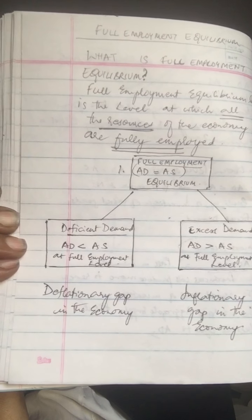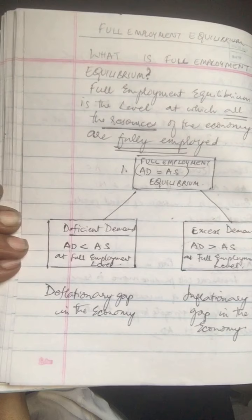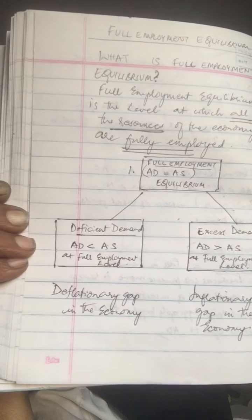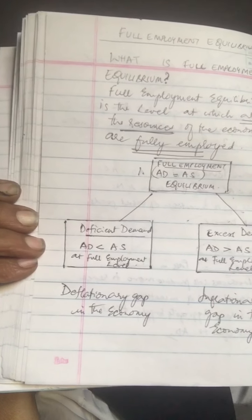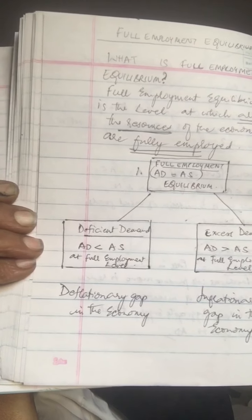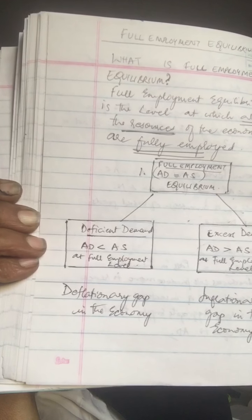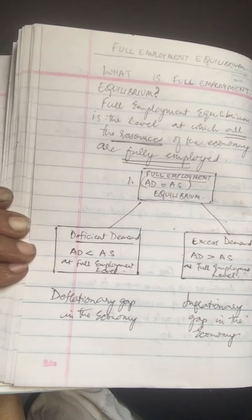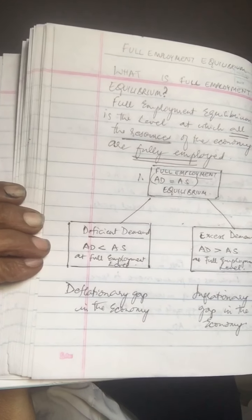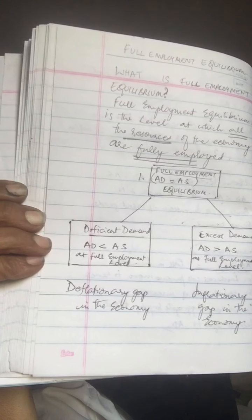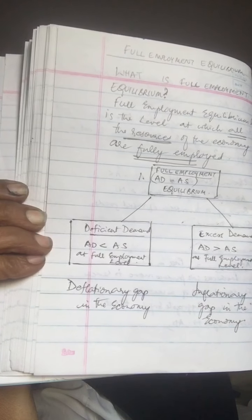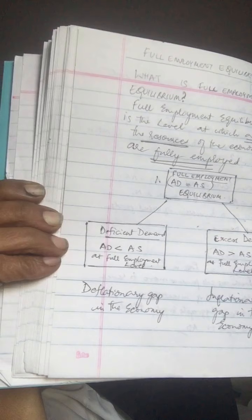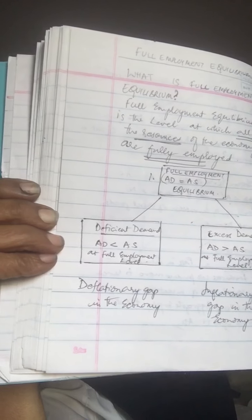On the other hand, if aggregate demand is more than aggregate supply at the full employment level, this is called excess demand. So these are the two situations: deficient demand when AD is less than AS at full employment equilibrium, and excess demand when AD is greater than AS at full employment level.